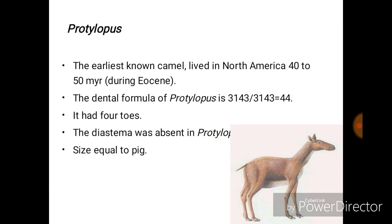The first one is Protylopus. The earliest known camel lived in North America 40–50 million years ago during the Eocene. The dental formula of Protylopus is 3 incisors, 1 canine, 4 premolars, and 3 molars — a total of 44 teeth. It had 4 toes, diastema was absent, and its size was just like a pig.